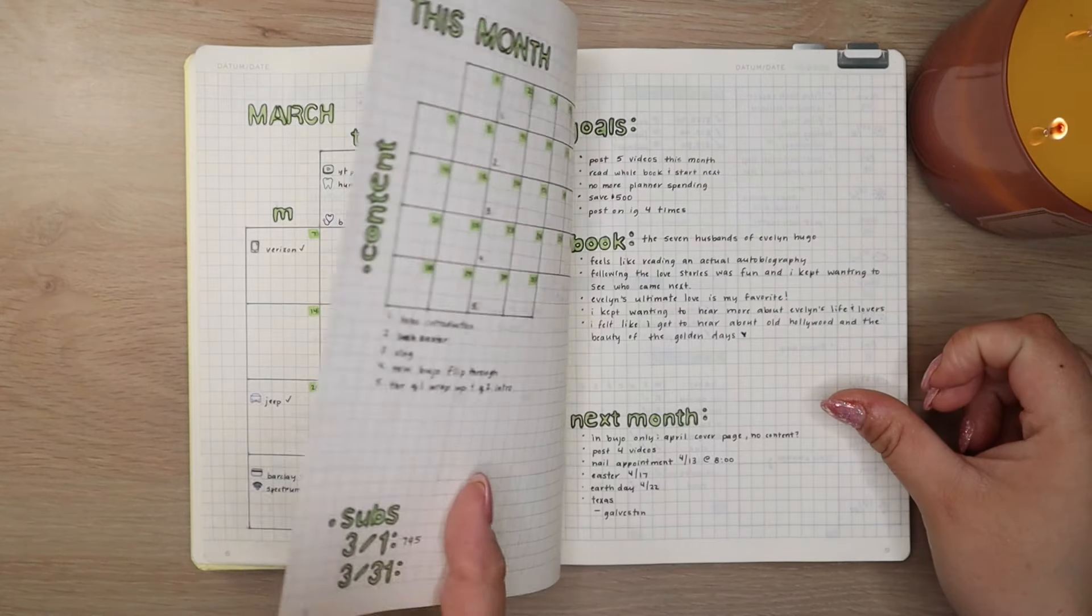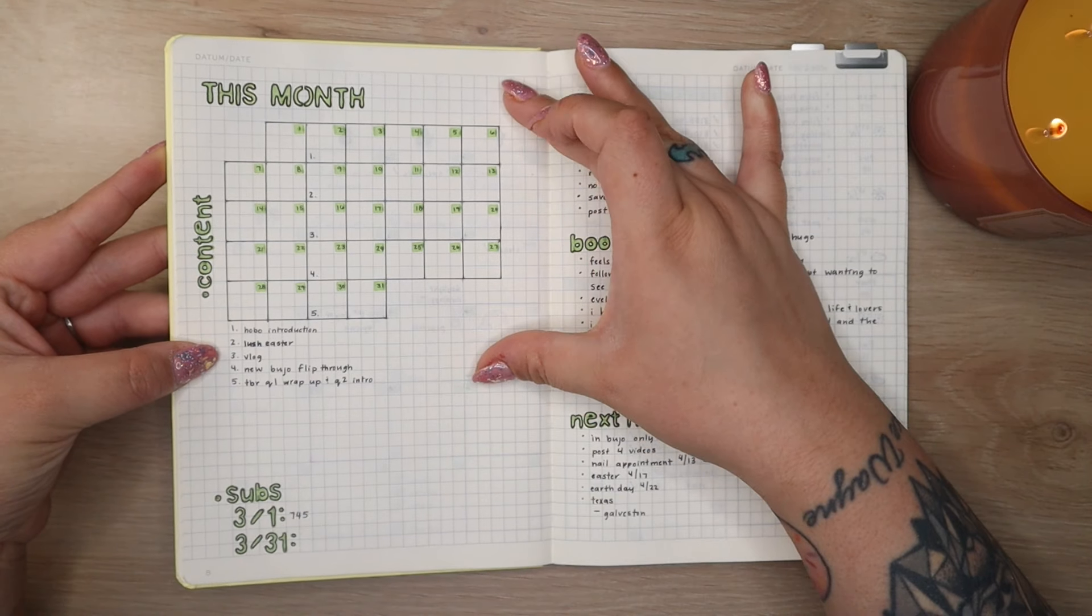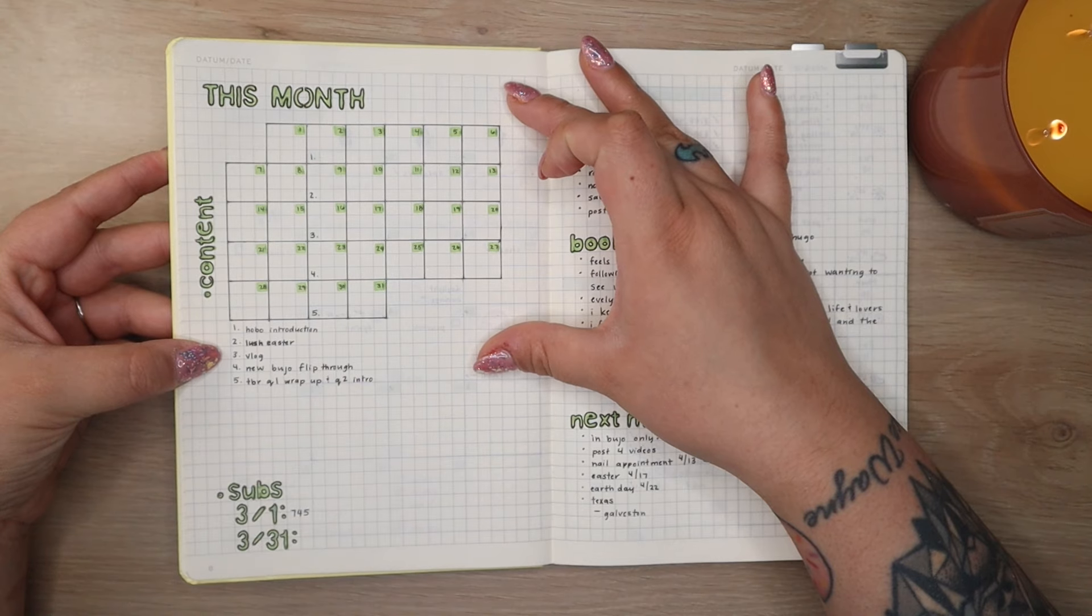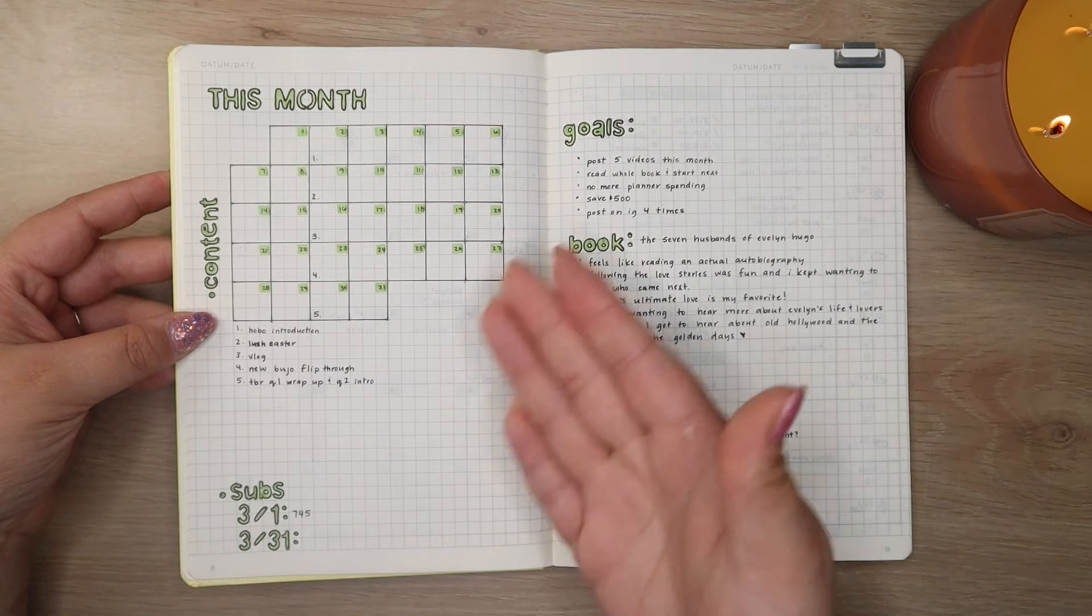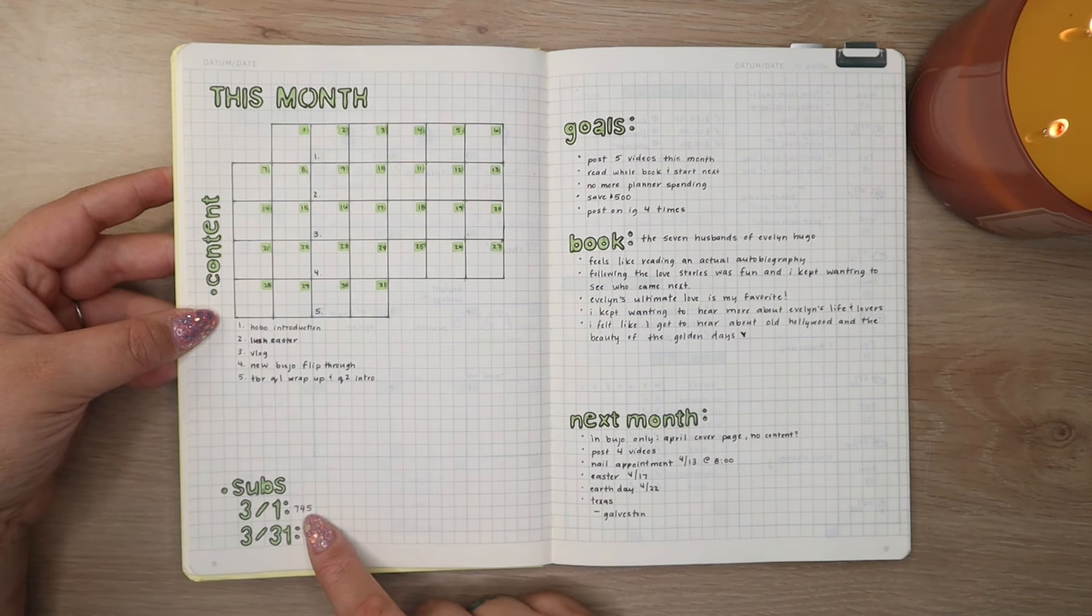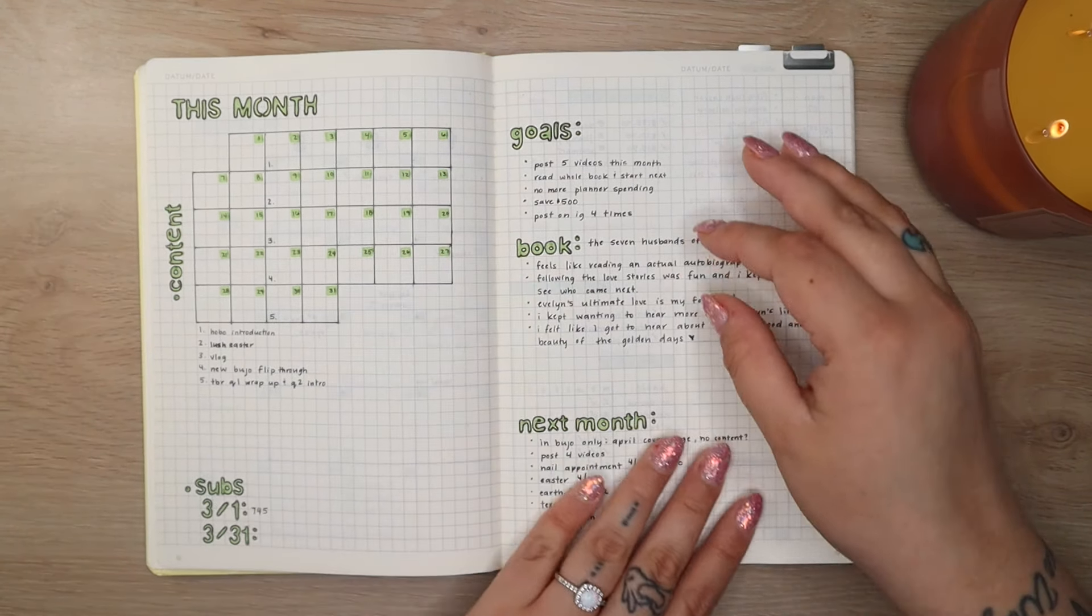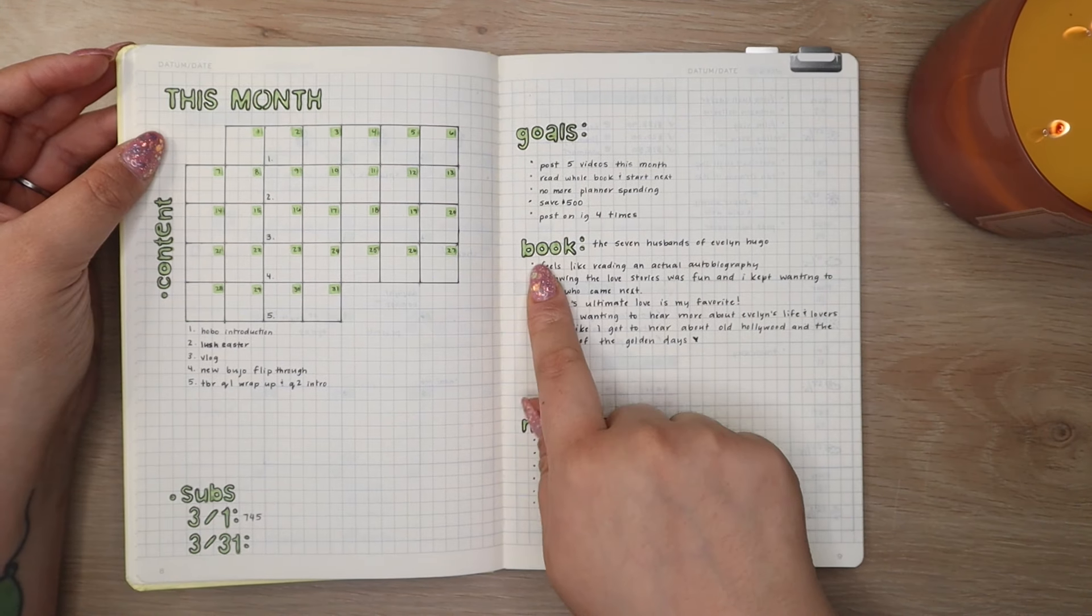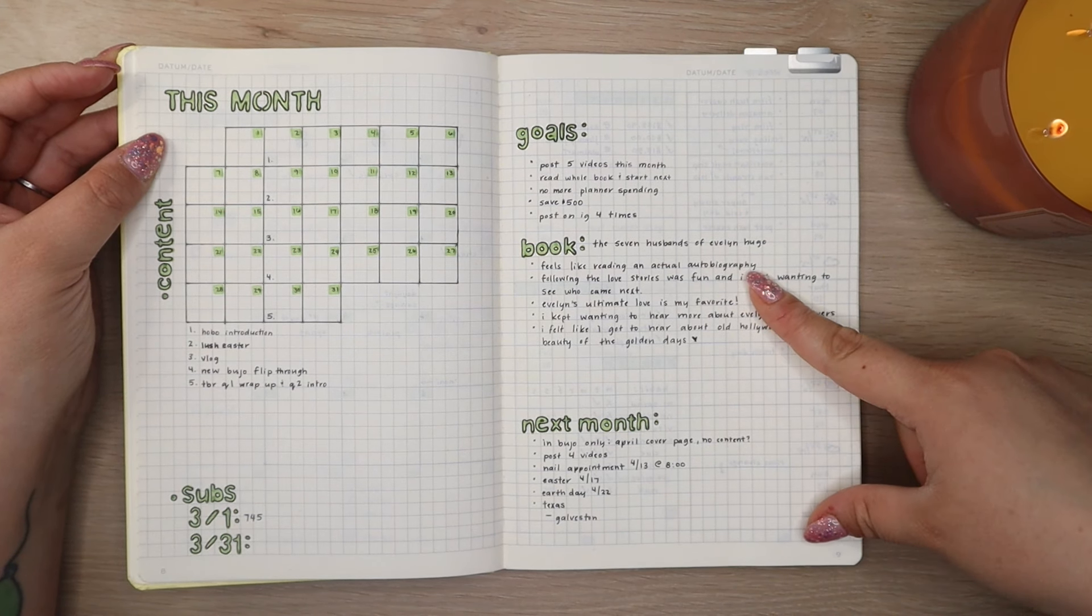And then I have my monthly dashboard. So I'm not entirely sure about this section right here. This is for content. It's kind of null and void because it's a bit redundant from having my YouTube videos on this page, but whatever it is right there. I also have my sub count. So what it was on the first of the month and then what it is on the last day of the month. And then over here I have just some like very surface level type goals. I also have a section for my book. So whatever book I'm reading for the month. So for March I am reading The Seven Husbands of Evelyn Hugo.